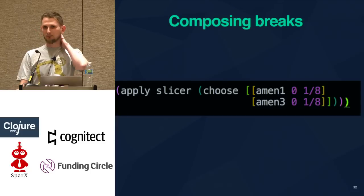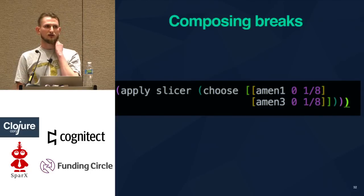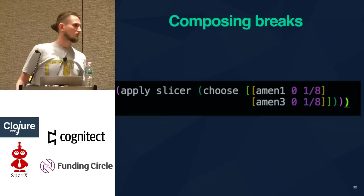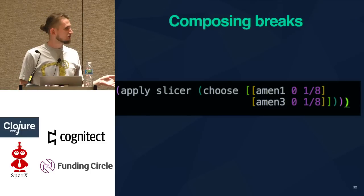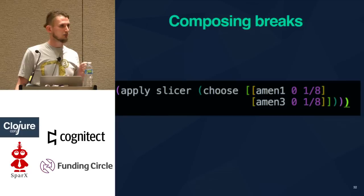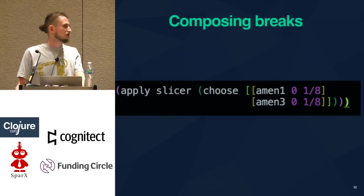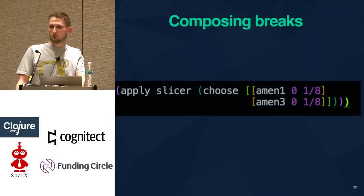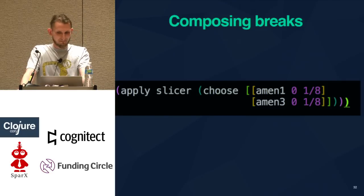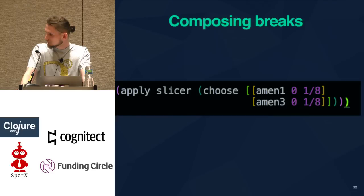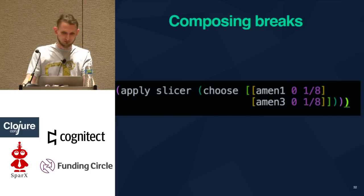We can also mix and match different breakbeat sounds — in this case I'm doing this at runtime. When speaking about chance techniques in music, this is chance techniques 101: you have a collection of equivalent sounds that you want to play, you just pick one at random and see what happens.